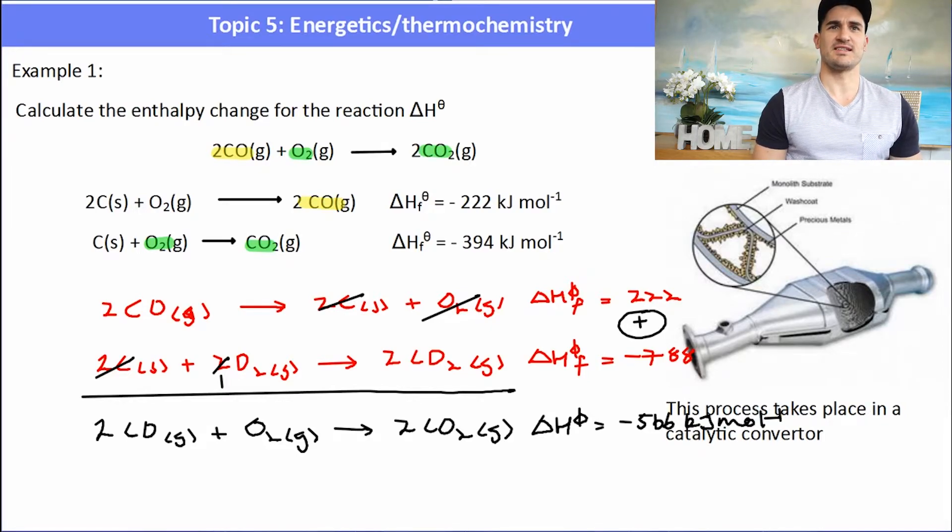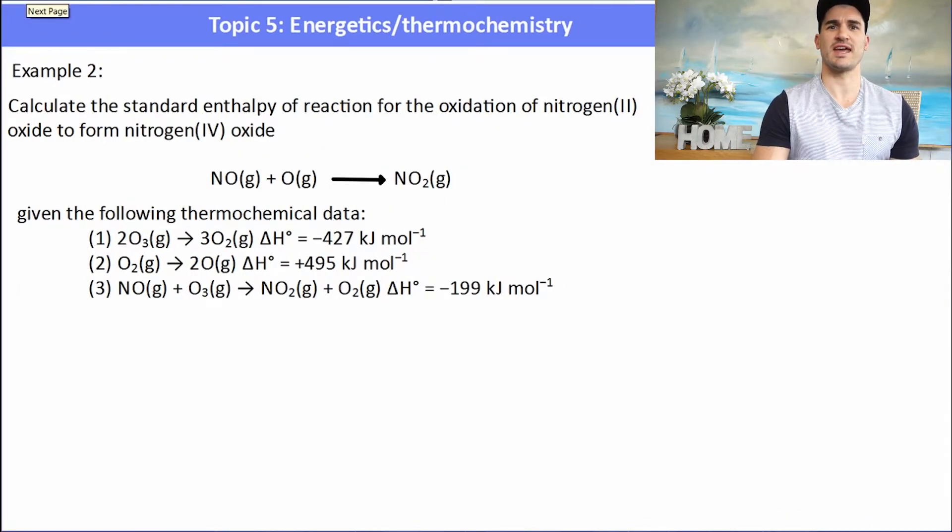So here's a second example where we have NO plus O gas goes to NO2 gas. Now this one's a little bit more complex. We've got three equations to deal with, but we want to apply the same kind of idea. Let's work out where the reactants are. So here we've got a reactant of NO, and then I've also got a reactant of O. So I've gone through and identified the locations of those. Now what I have to do is try and arrange those equations to make sure I get the correct chemical equation. So what I'm going to do is I'm going to start to rearrange these so that I can keep my reactants on one side and what I need for the products on the other.